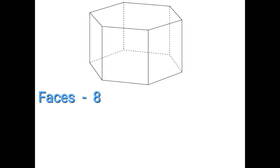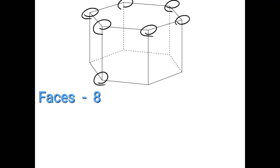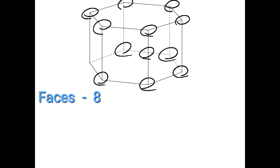Vertices is 12. Counting the points: 1, 2, 3, 4, 5, 6, 7, 8, 9, 10, 11, 12. The points I have circled — I am getting 12. Number of vertices or points is 12.